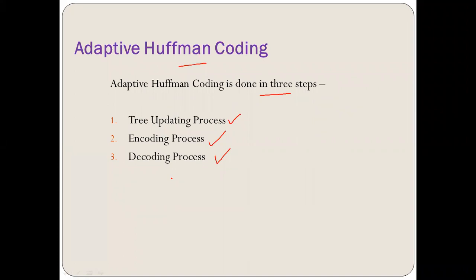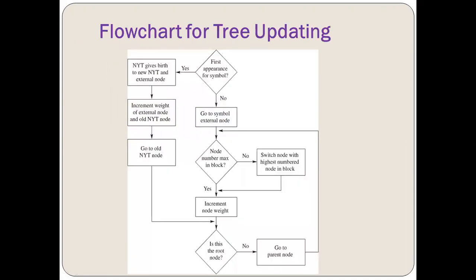In this topic, questions generally come of eight to ten marks, so that's a good point — you can score better. Starting with the tree updation procedure.